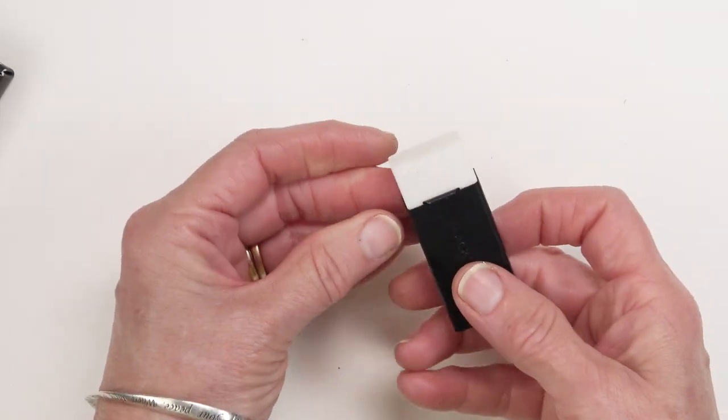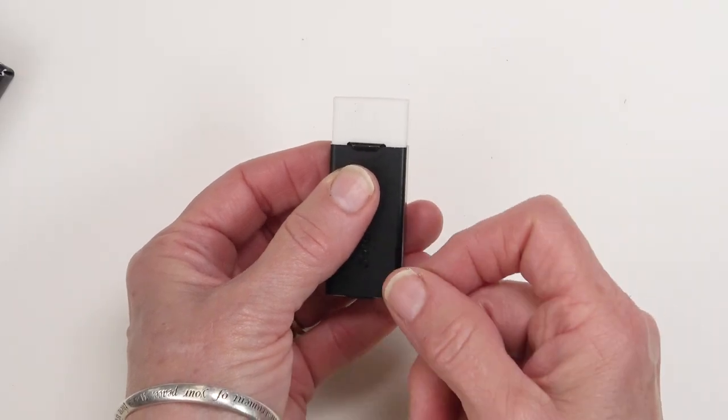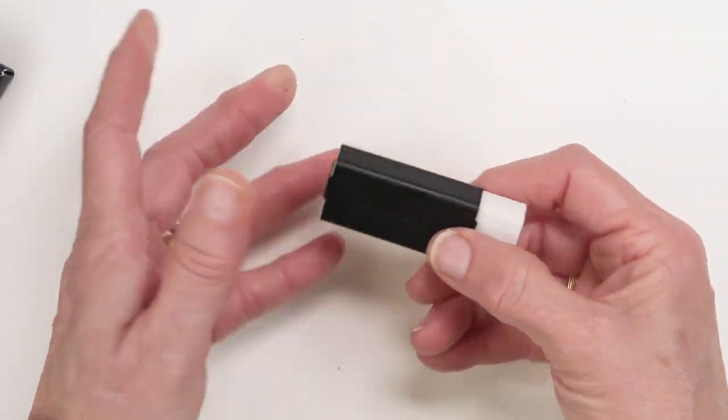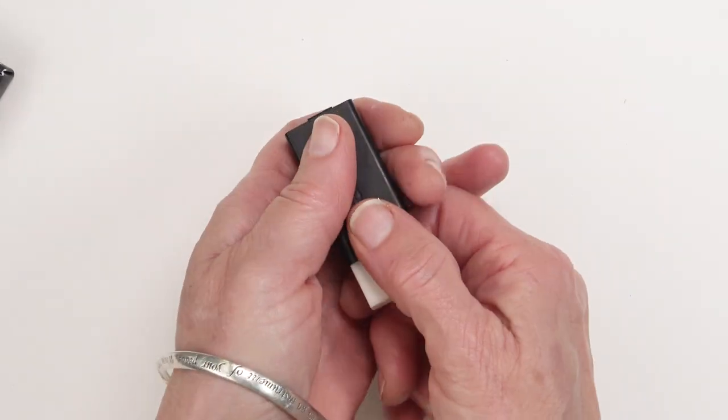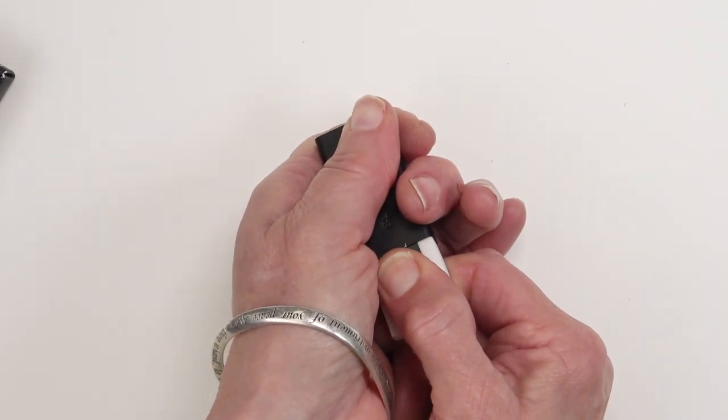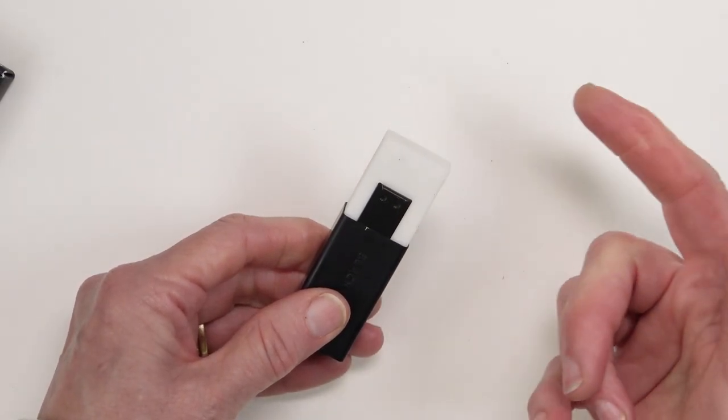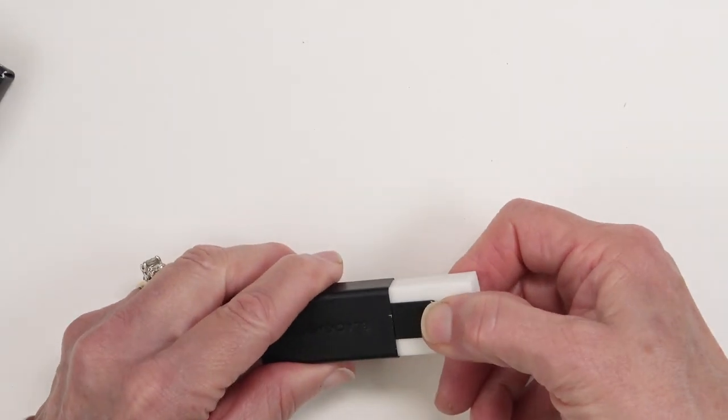You'll notice it has the same system for moving the eraser forward as the pencils do at the end. Now you have to squeeze it pretty good to pull it out because if it pulled out too easily it wouldn't hold the eraser in place.